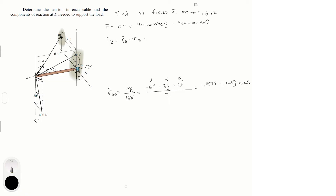Now that we have this unit vector, we can write the Cartesian vector form of TB as: −0.857·TB in the i, minus 0.428·TB in the j, plus 0.286·TB in the k.